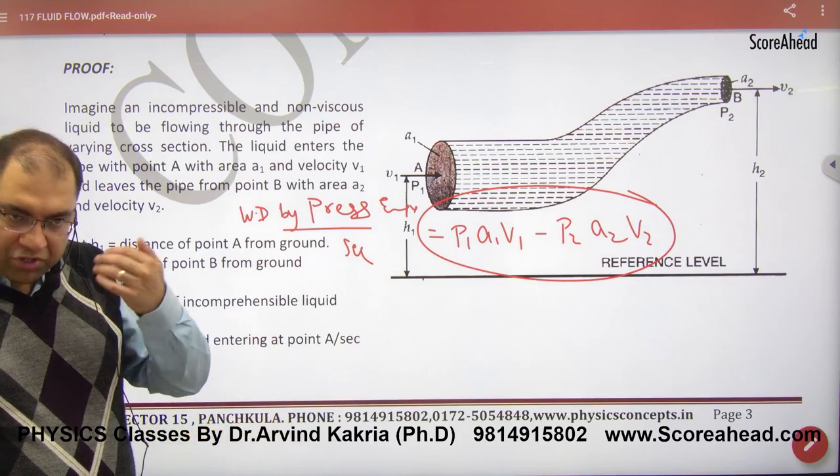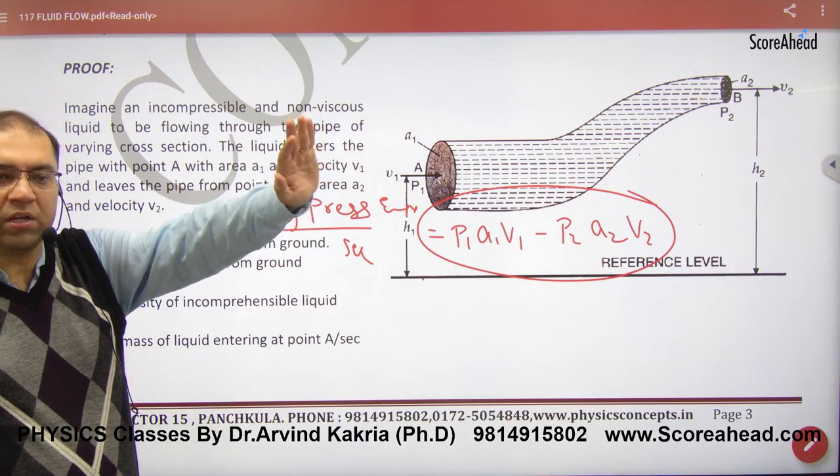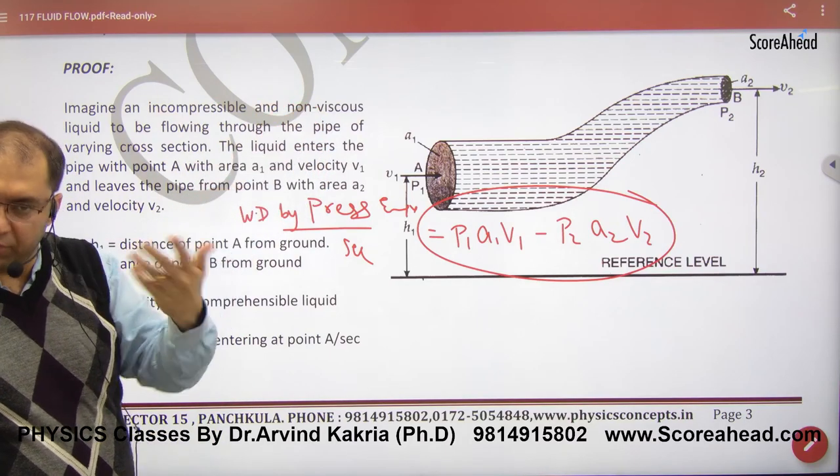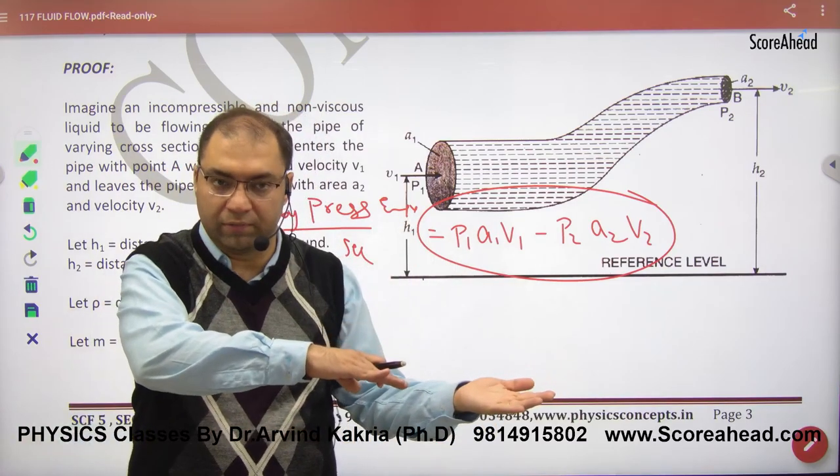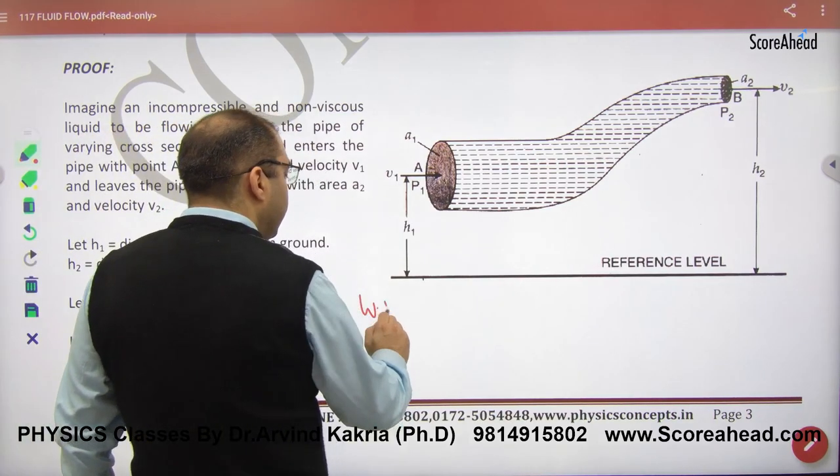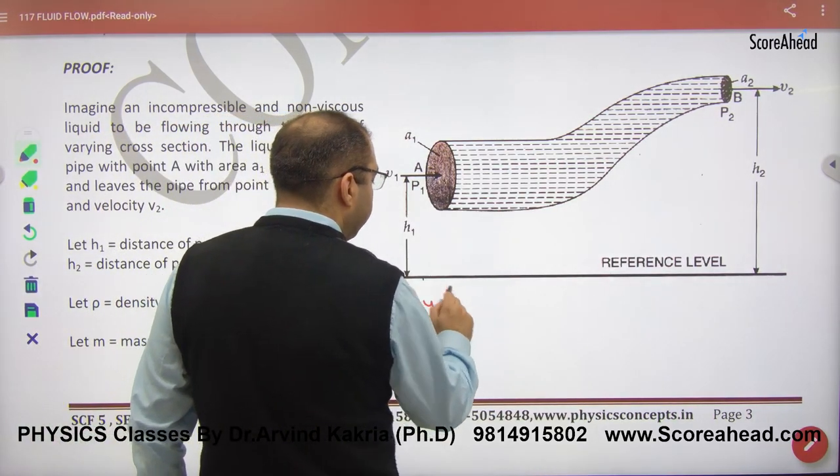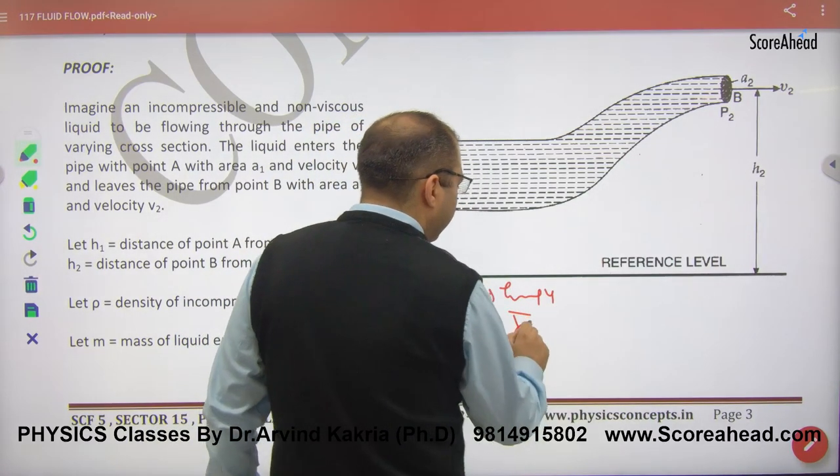Now what happened with this? Pressure work done by pressure. The water went up. So there is change in kinetic energy. There is change in potential. So kinetic and potential, the reason is pressure energy. So what can I write? Like I wrote, work done by pressure energy per second.